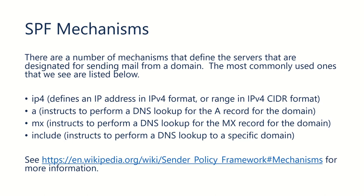The A mechanism performs a DNS lookup for the A record for that domain, which is essentially your website. So if you're using your website to send email — like maybe you have a web form and it sends email directly from your web server and not through another service — then the A mechanism is the easiest way to include that.